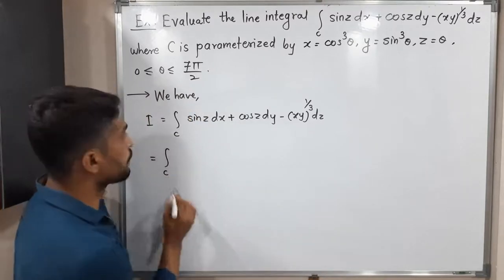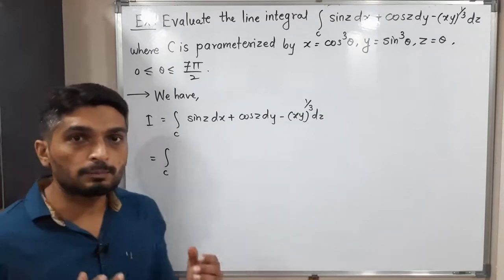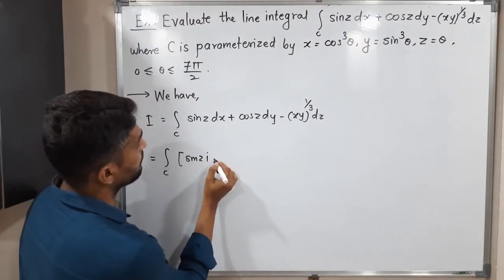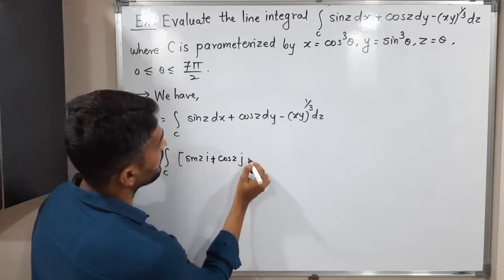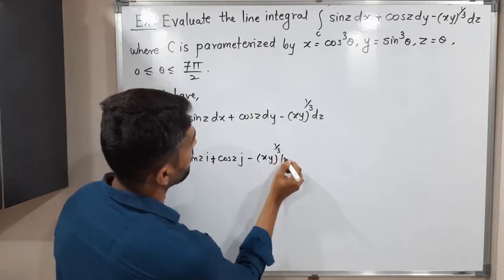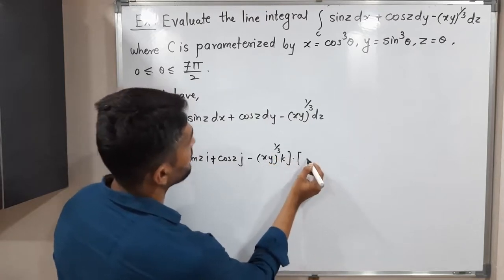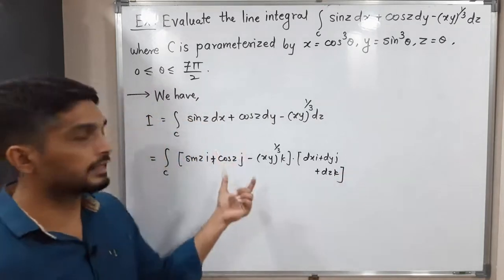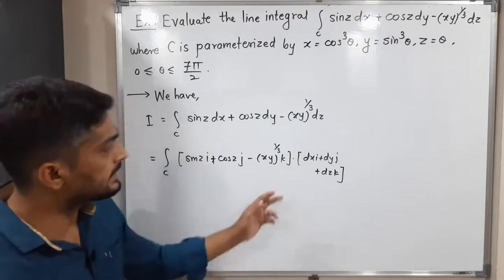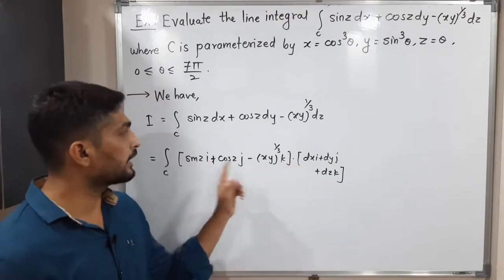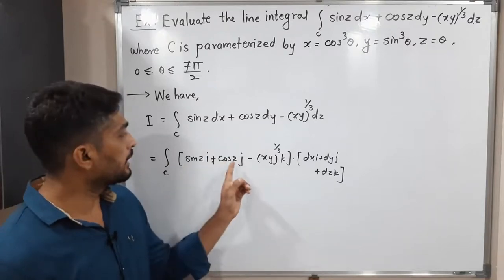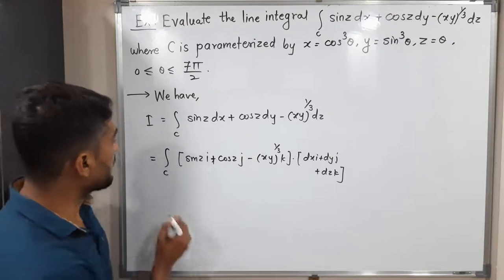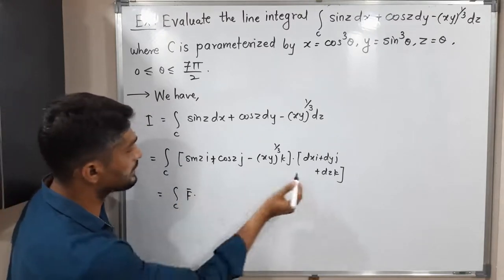This is equal to integration over C. This function can be expressed as a dot product of two vector fields: sine(z) i + cos(z) j − xy^(1/3) k, dot product with dx i + dy j + dz k. So I have expressed this integral as a dot product of two functions. Taking the dot product: sine(z) dx, cos(z) dy, and the third term will be minus xy^(1/3) dz. The first bracket is our F-bar and the second is dr-bar.